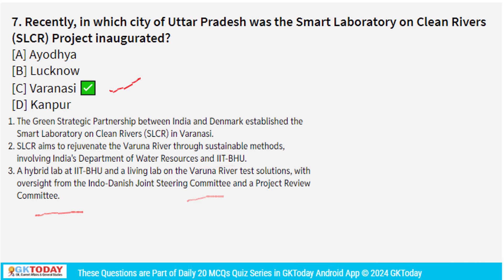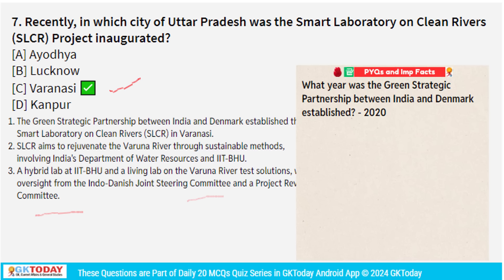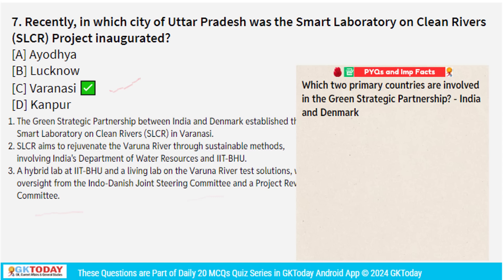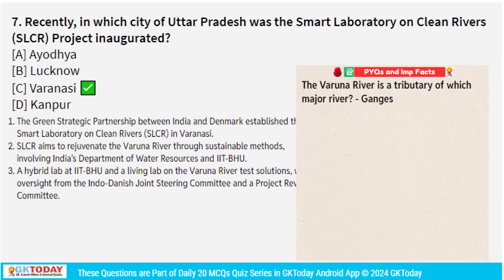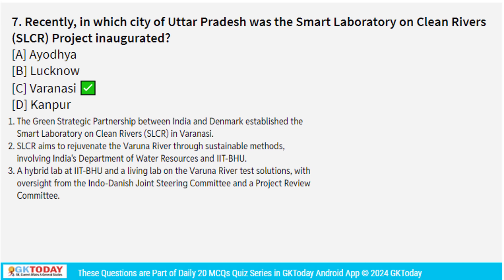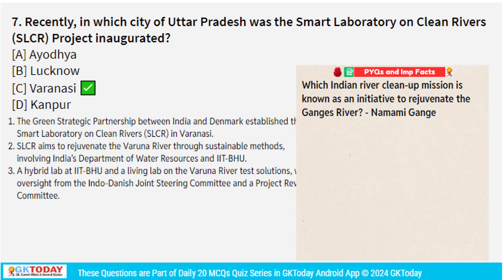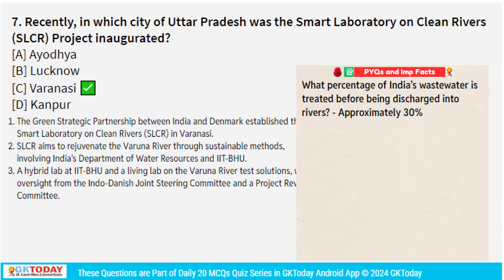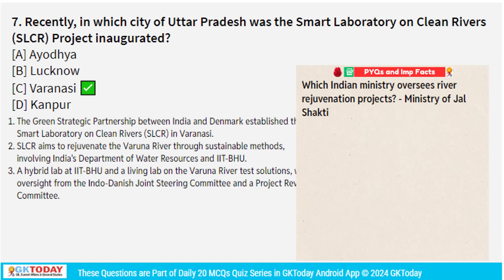The Green Strategic Partnership between India and Denmark was established in 2020 for sustainable development. The Varuna river is a tributary of the Ganga. The Namami Ganga programme is the initiative to rejuvenate the Ganga river. Approximately 30% of Indian wastewater is treated before being discharged into rivers. The Ministry of Jal Shakti oversees river rejuvenation projects.